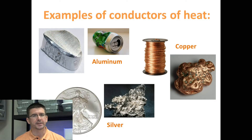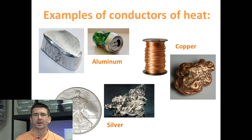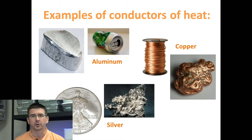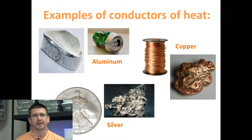There are lots of different materials that make good conductors of heat, and we'll be looking at some in our labs and activities. A few very common examples are aluminum, copper, and silver — all of them are metals, and many types of metals make the best conductors of heat.